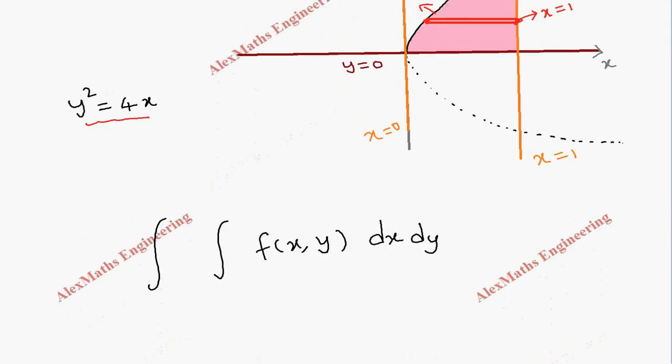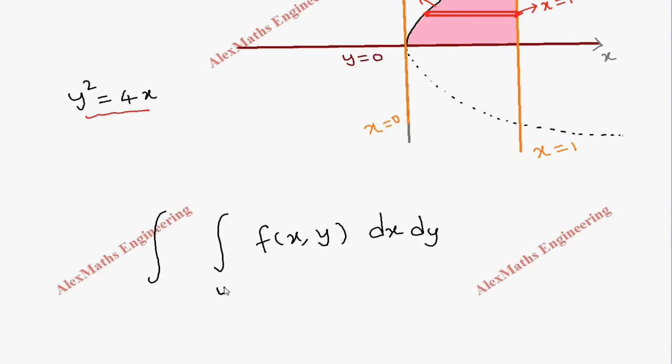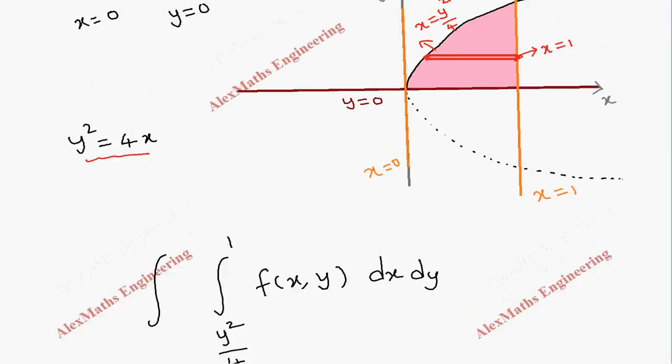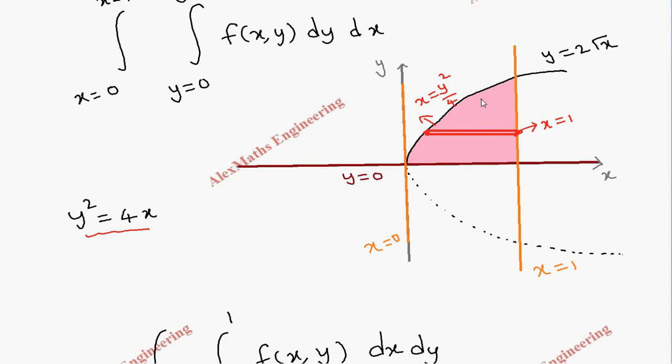So here it is y square by 4 to 1. Then we have to consider a vertical strip here, starting from the base here on x-axis. So here the value of y is 0 and here the maximum value, so when x is 1, if I substitute x is 1 here then I get 2 root 1 which is 2. So this value is y is equal to 2.